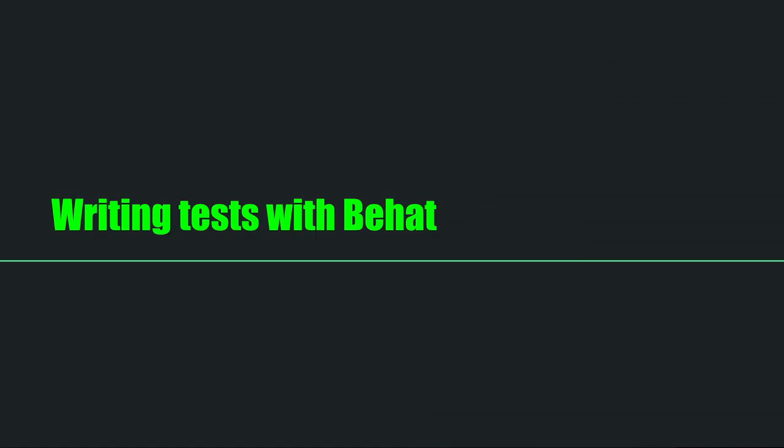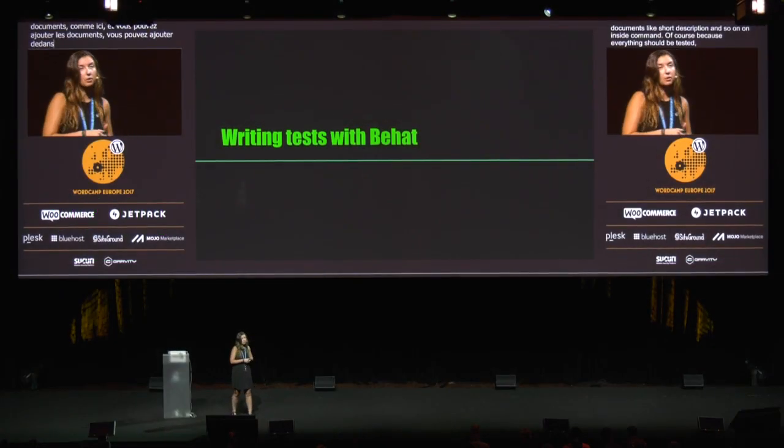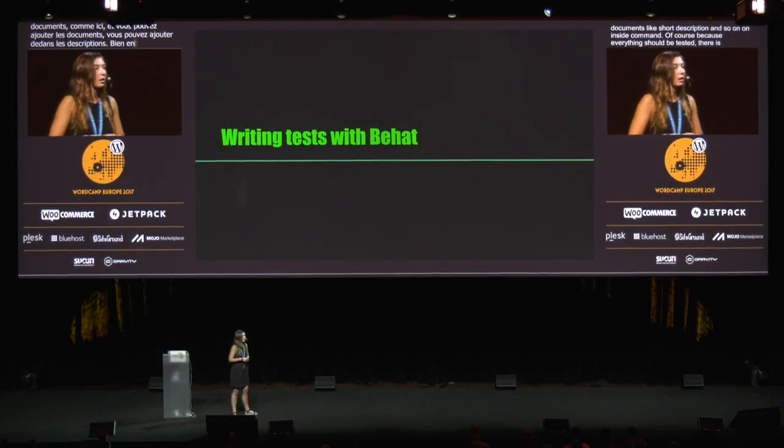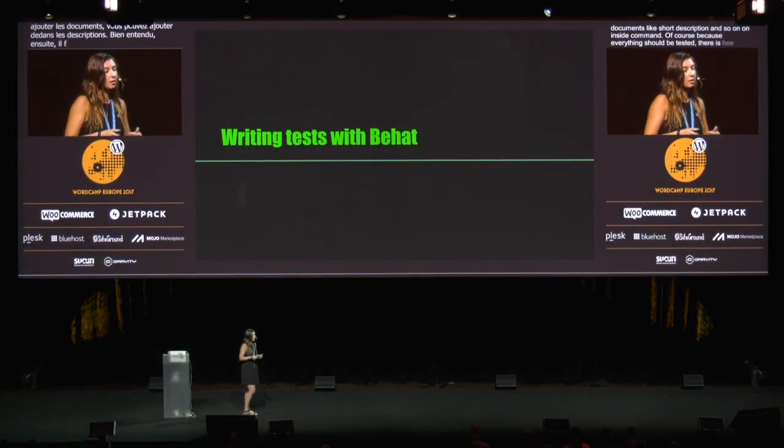Of course, because everything should be tested, there is a Behat framework for WP-CLI. It creates tests that are very easy to write — functional tests that interface with the command the exact same way that users will. All that's needed is to run WP scaffold package tests, which will generate the files for your tests, and you're ready to go.